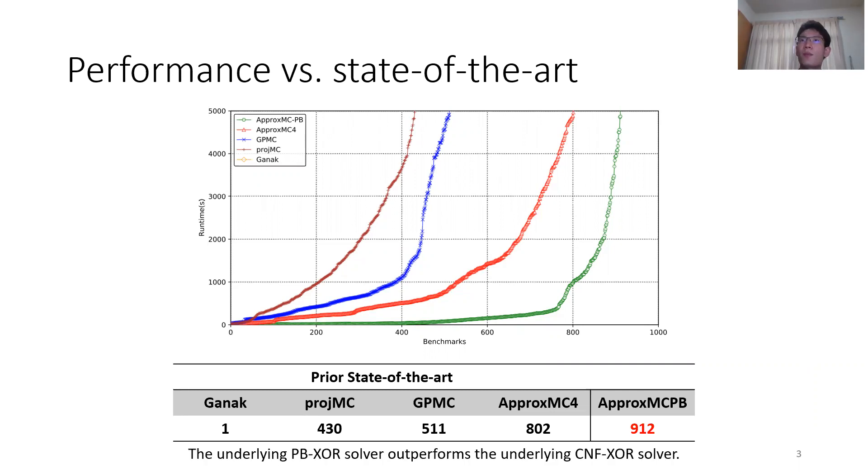Furthermore, the fact that ApproxMCPB outperforms ApproxMC reveals that the underlying PB-XOR solver outperforms underlying CNF XOR solver.